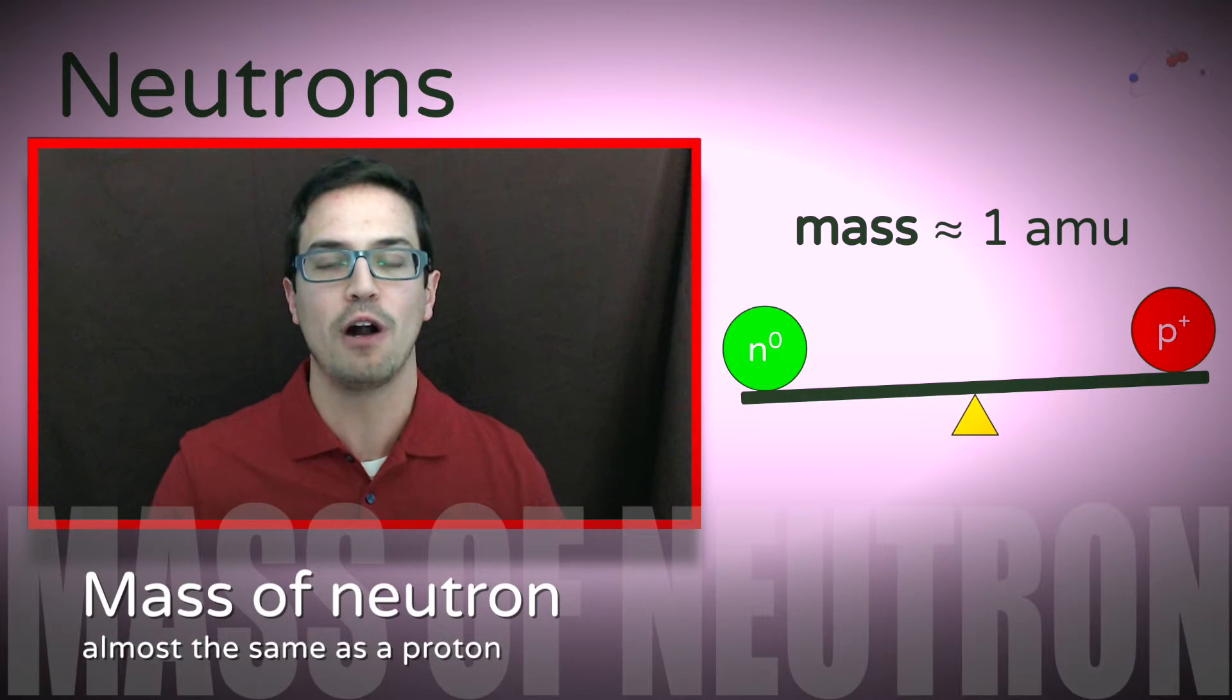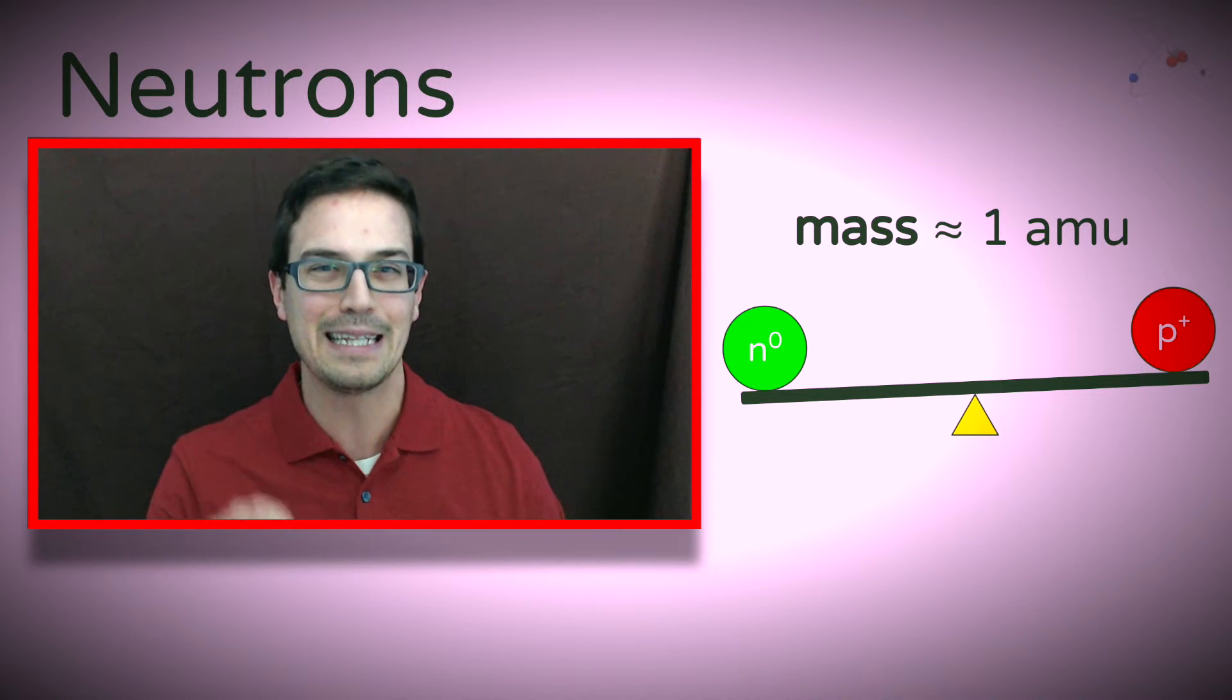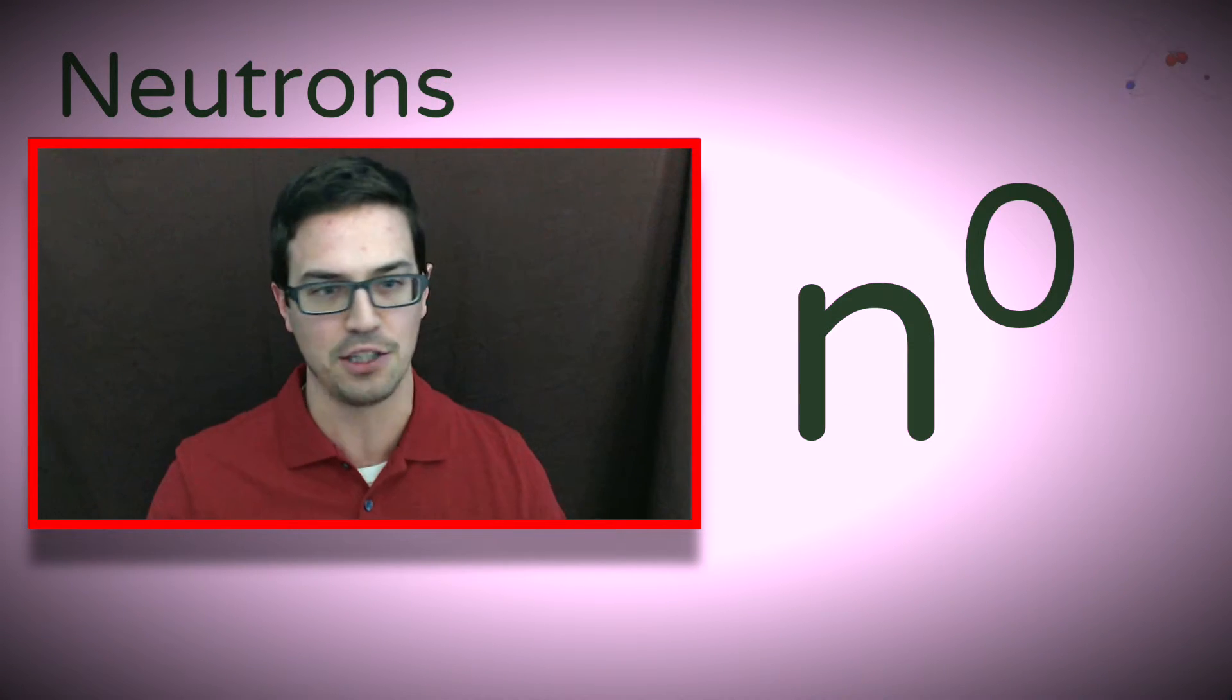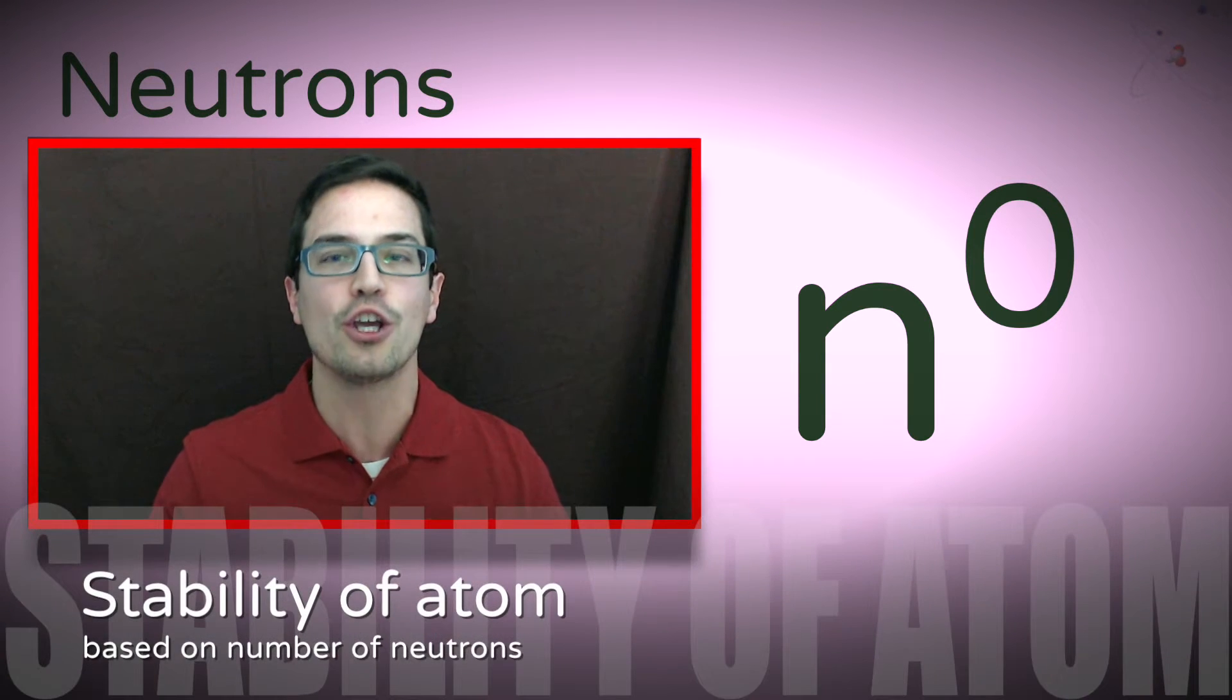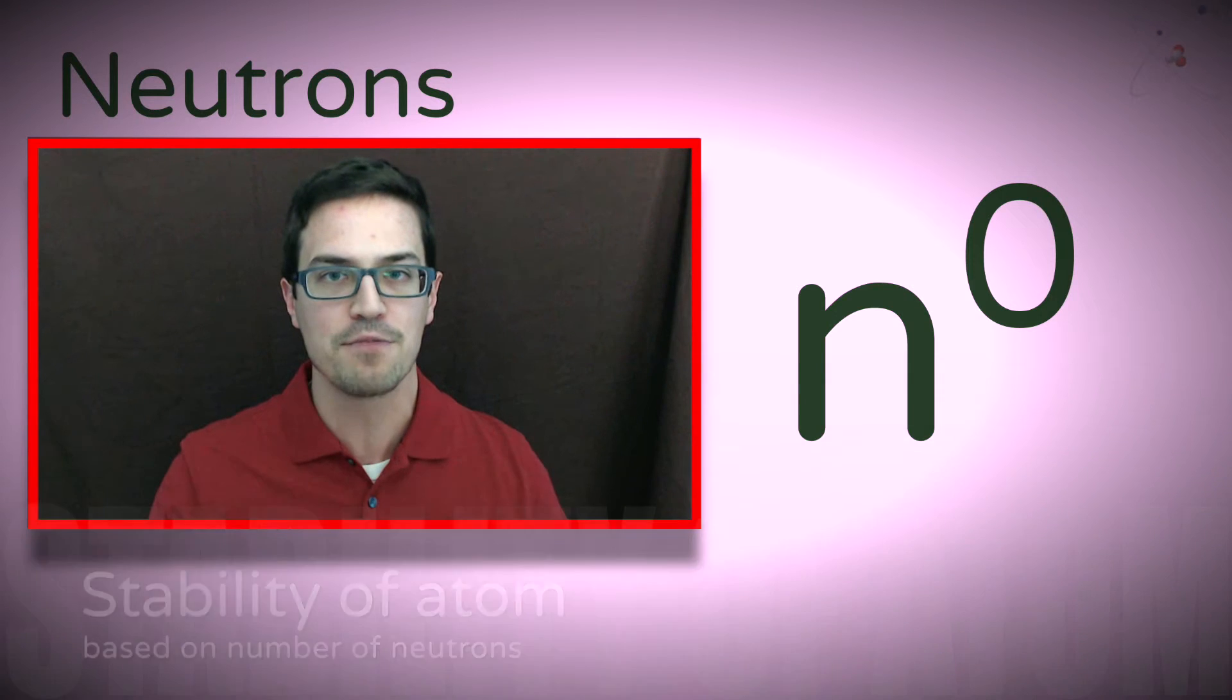The mass of the neutron is roughly the exact same as the mass of a proton. The neutron is a little bit more, but overall it's pretty negligible. Although they are neutral, neutrons play a huge role in keeping atomic nuclei stable.